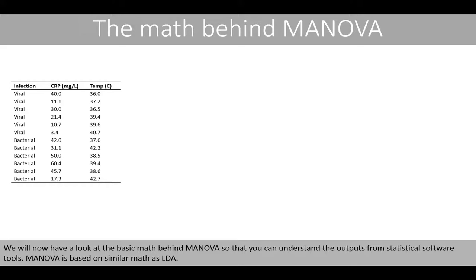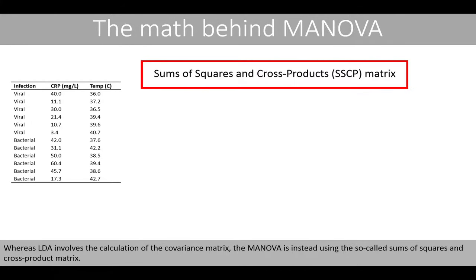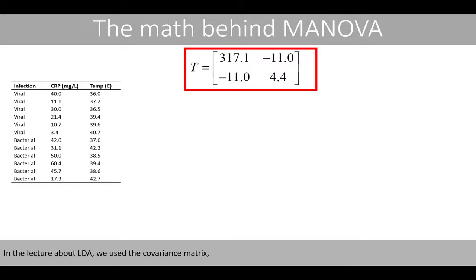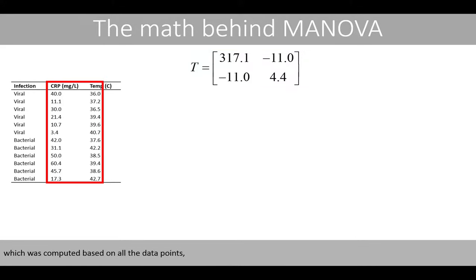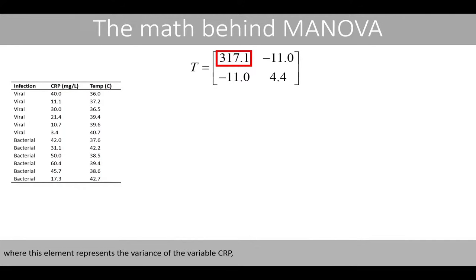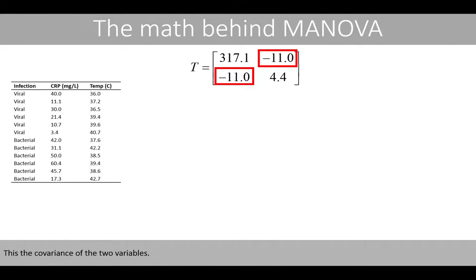We'll now have a look at the basic math behind MANOVA so that you can understand the outputs from statistical software tools. MANOVA is based on similar math as LDA. Whereas LDA involves the calculation of the covariance matrix, MANOVA instead uses the so-called sums of squares and cross-product matrix. In the lecture about LDA, we used the covariance matrix computed based on all the data points, where one element represents the variance of CRP, another the variance of body temperature, and another the covariance of the two variables.